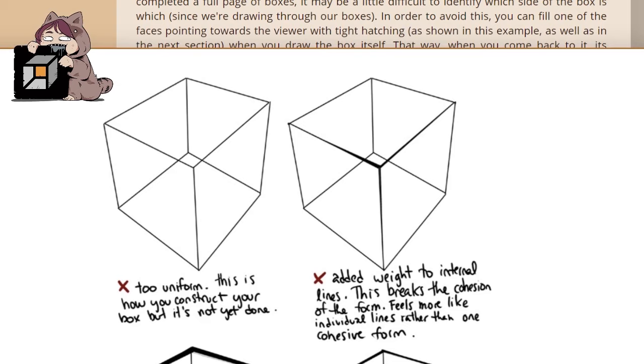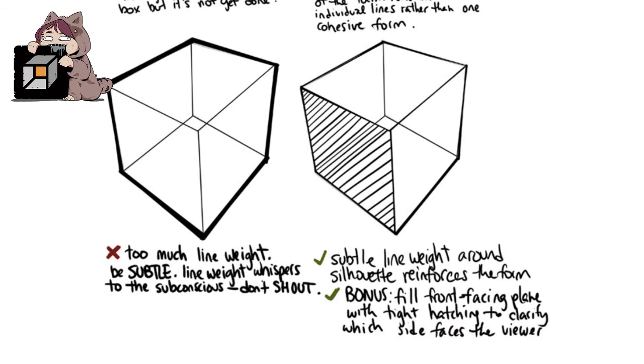So the box on the left is too uniform - this is how you construct your box, but it's not done yet. This box to the right has added weight to internal lines, and this breaks the cohesion of the form. It feels more like individual lines rather than one cohesive form, so don't do this. And then now here to the left, there's too much line weight. You need to be subtle. Line weight whispers to the subconscious - do not shout. And finally, to the right here is the correct box: subtle line weight around the silhouette reinforcing the form, and filling the front-facing plane with tight hatching clarifies which side faces the viewer. That way, when you come back after a page is done and extend your lines, you know how to start.